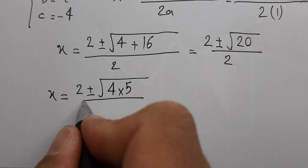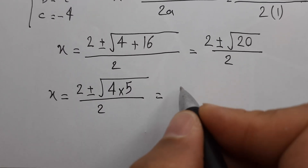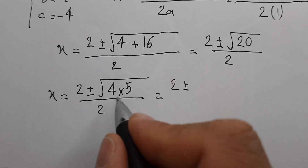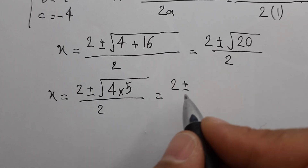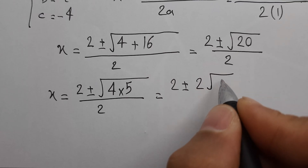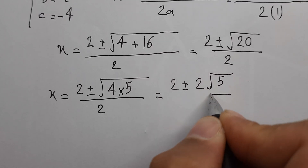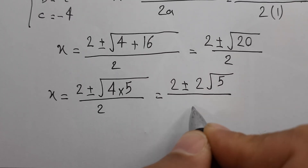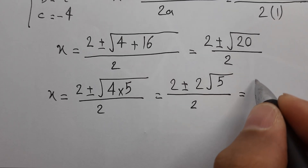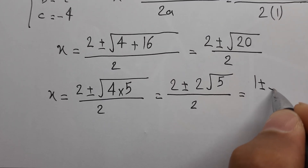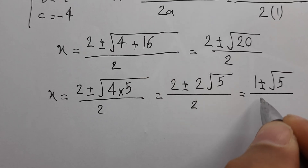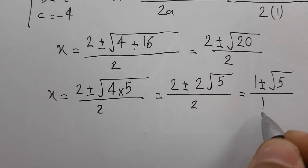We can write 20 as 4 times 5, over 2. So 2 plus or minus — the square root of 4 is 2, giving 2 times square root of 5 — over 2. And we have 1 plus or minus square root of 5.